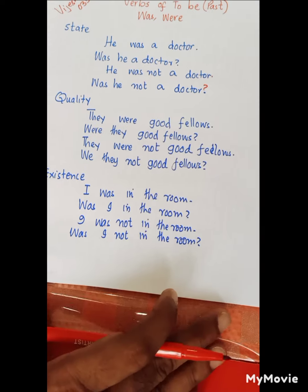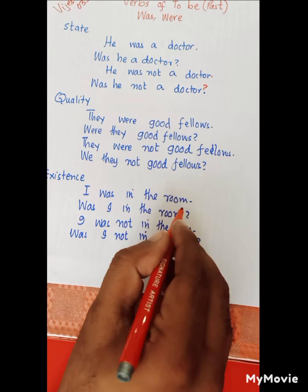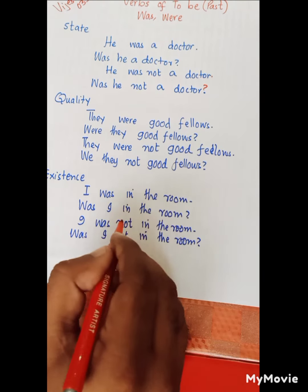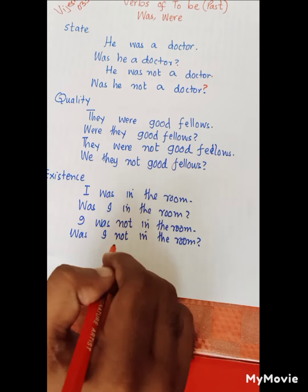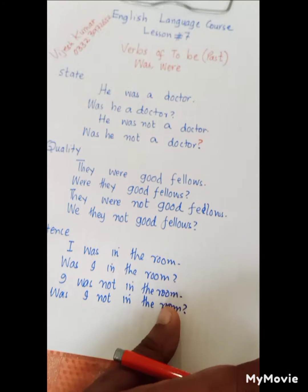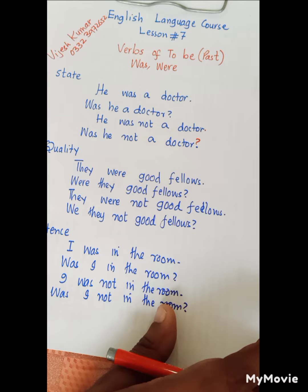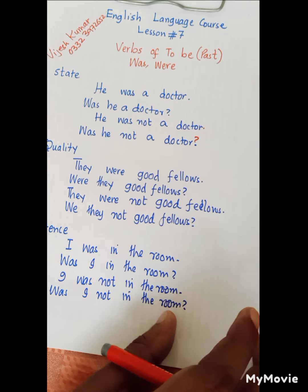And for existence: 'I was in the room.' Interrogative: 'Was I in the room?' Negative: 'I was not in the room.' Interrogative negative: 'Was I not in the room?' So past verbs of to be are two — 'was' and 'were'.